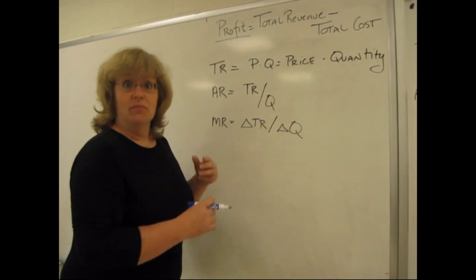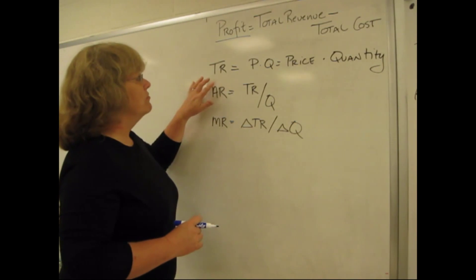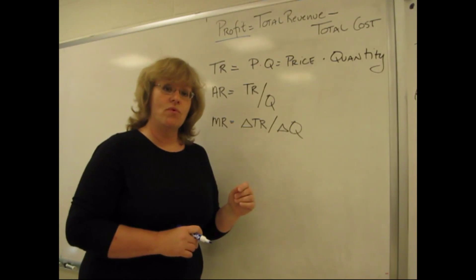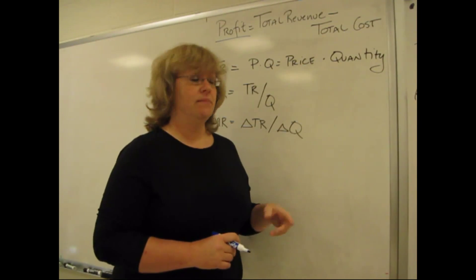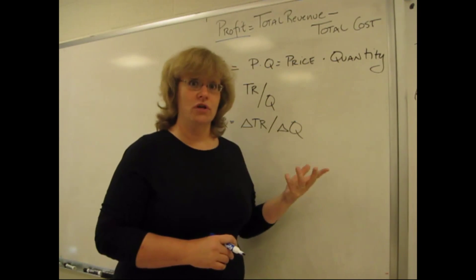Total revenue in your book and in most of what we're going to be doing up here is usually abbreviated TR. And total revenue equals price times quantity. The amount that you sell, the quantity, times the price that you charge for each one of those. So price times quantity.